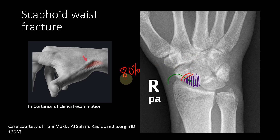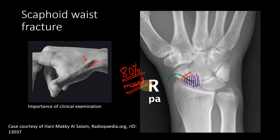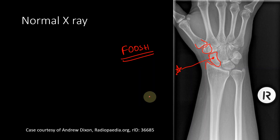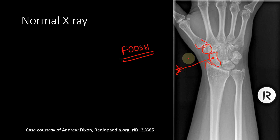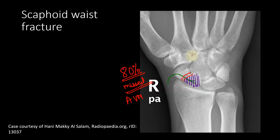Scaphoid fracture accounts for 70 to 80 percent of all carpal bone fractures. It is notorious for being missed even on X-ray, and it is also the carpal bone most prone to avascular necrosis. For all these reasons, the bones forming the floor of the anatomical snuffbox — especially the scaphoid — are of great clinical importance.